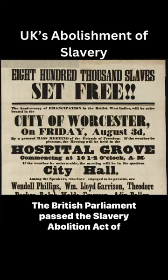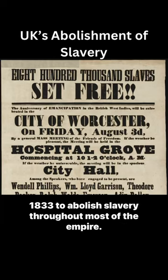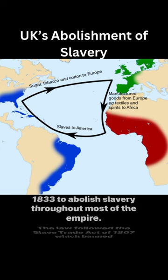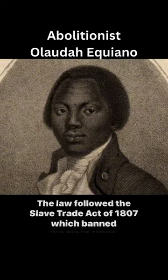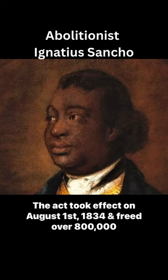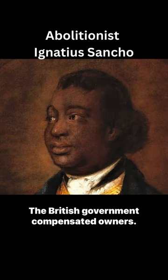The British Parliament passed the Slavery Abolition Act of 1833 to abolish slavery throughout most of the empire. The law followed the Slave Trade Act of 1807, which banned the slave trade. The act took effect on August 1st, 1834, and freed over 800,000 enslaved people.